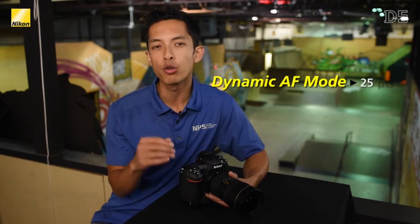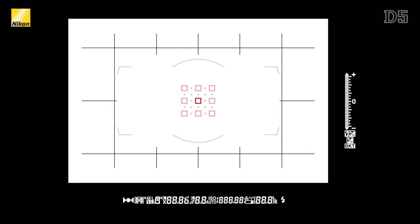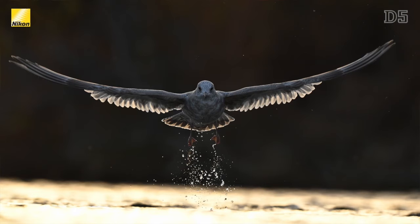The dynamic area modes used to be 9-point, 21-point, and 51-point on the D4S, but thanks to the higher density AF now available on the D5 it is now 25, 72, and 153 points. This means that if you're using the 25-point dynamic mode, you'll initiate focus with one AF point and the surrounding 24 points will help out if the subject strays off that initial AF point. Dynamic mode AF offers a bit more accuracy of focus for sports such as football or subjects such as birds in trees.